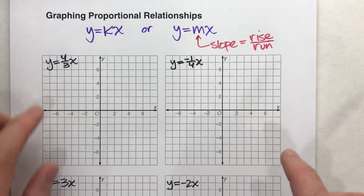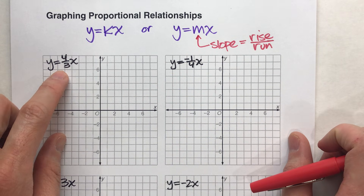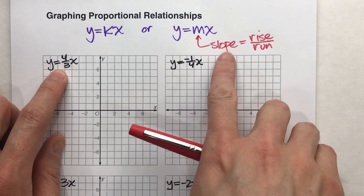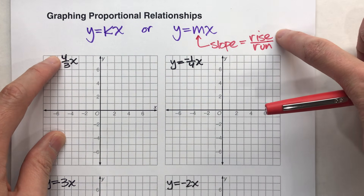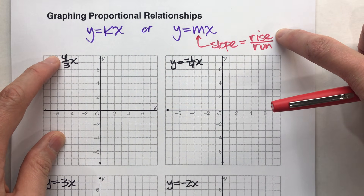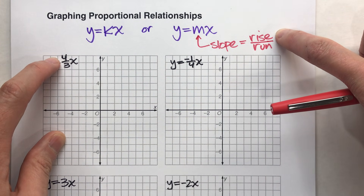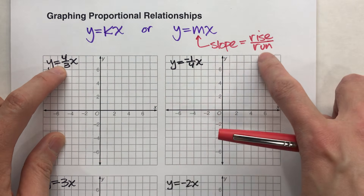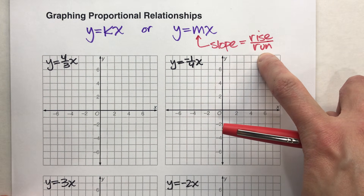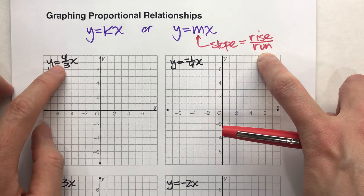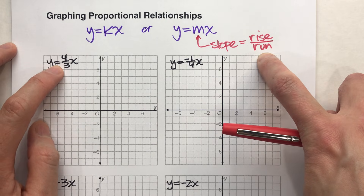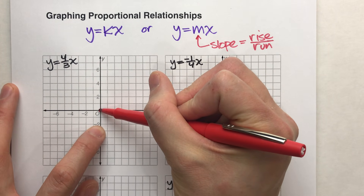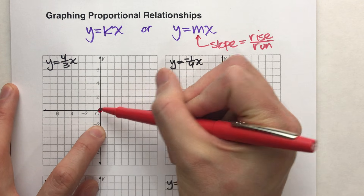Let me show you what I mean. y equals four-thirds x. So four-thirds is my slope. The number on top is my rise — it tells me how much up I have to go between points. The number on the bottom is my run — it tells me how many to the right I have to go between points. Every proportional relationship goes through (0, 0), so I'm going to start with that point.